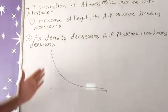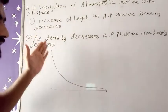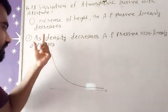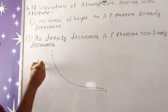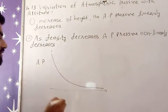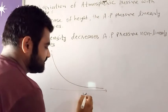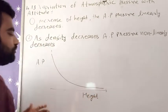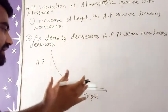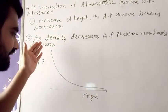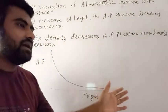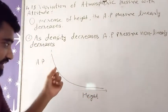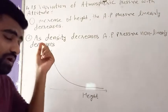Now let us look at the graph. On the graph, atmospheric pressure is on one axis and height is on the other axis. As the height is growing, the atmospheric pressure is less — it decreases as we go higher.